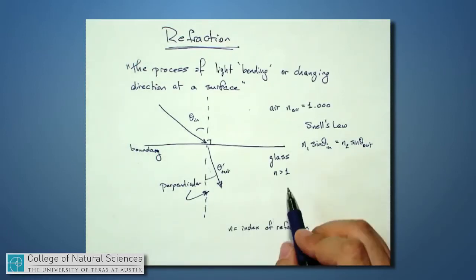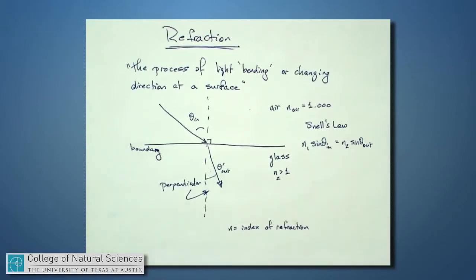But then because n2 down here is a bigger number because we're shooting into glass, let's say, in order to keep this product of these two numbers equal to the product of these two numbers, this has to be a smaller number, the sine of that output angle. As a result,